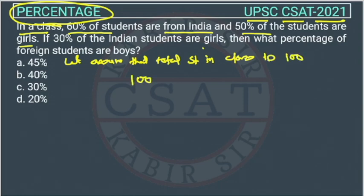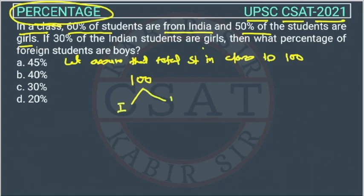So there are 100 students. The first statement says 60% of the students are from India. So 60% of 100 will be 60 students from India, and the remaining 40 are foreign students.